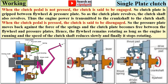When the clutch pedal is pressed, the clutch is said to be disengaged — you can see the gap. The pressure plate moves back against the force of the spring, and the clutch plate becomes free between the flywheel and the pressure plate. Hence, the flywheel remains rotating as long as the engine is running, and the speed of the clutch shaft reduces slowly until it finally stops rotating. These two cases show the engaged and disengaged positions.